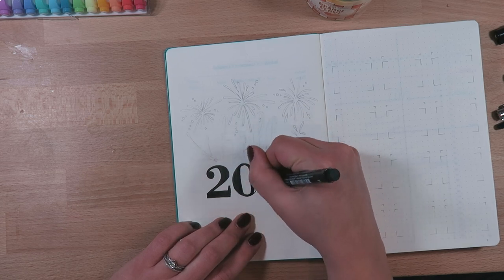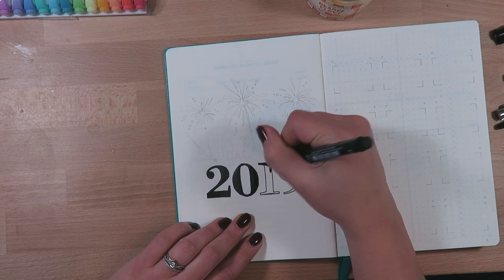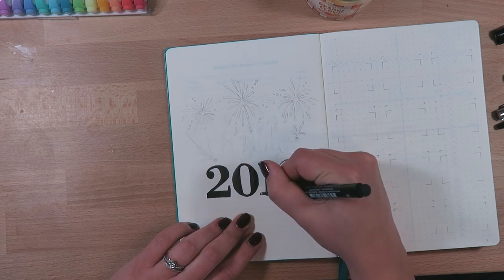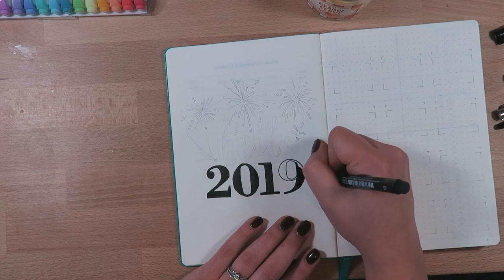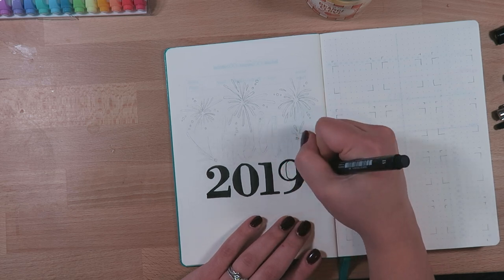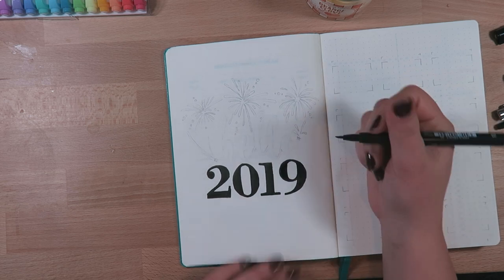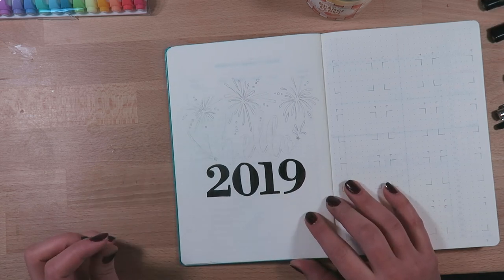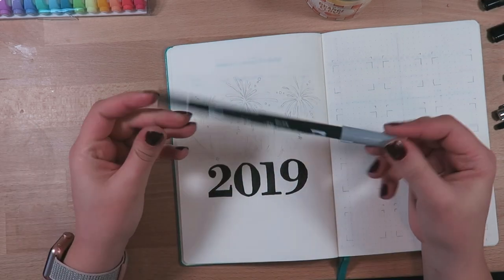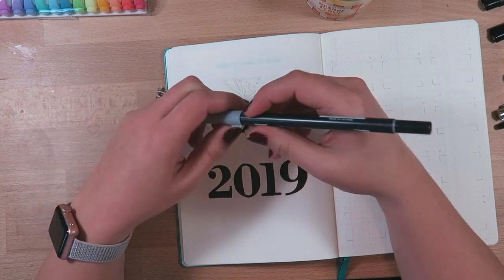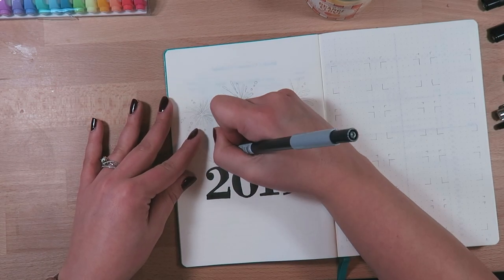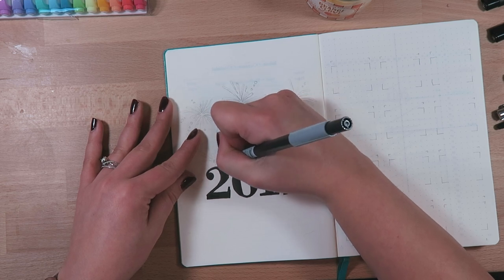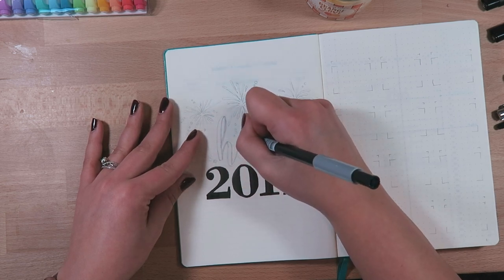I mostly use the monthly sections as kind of just a way to break up the year. I don't tend to use the day-to-day list planning. I still use my inserts that I create for my B6 Foxy Fix. I make inserts and sell those on my shop, The Sticky Fox on Etsy.